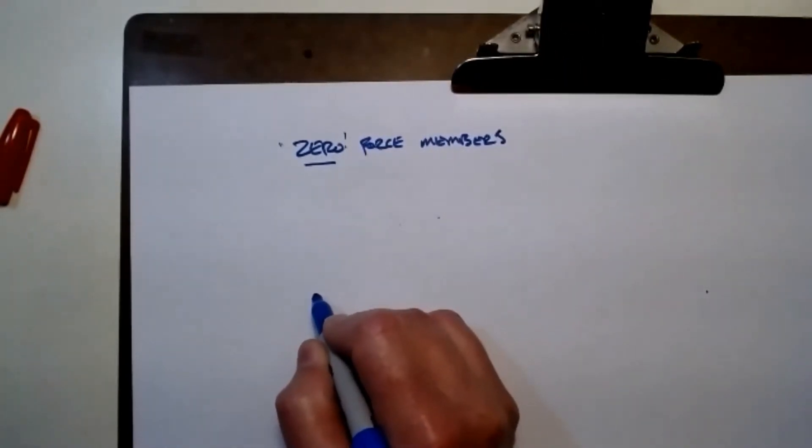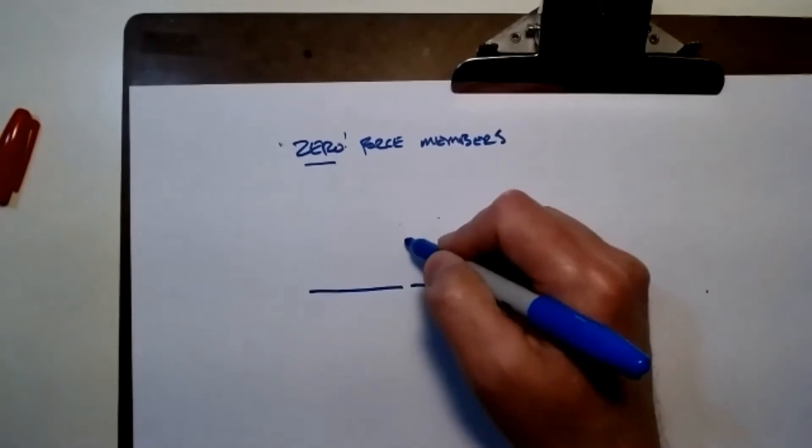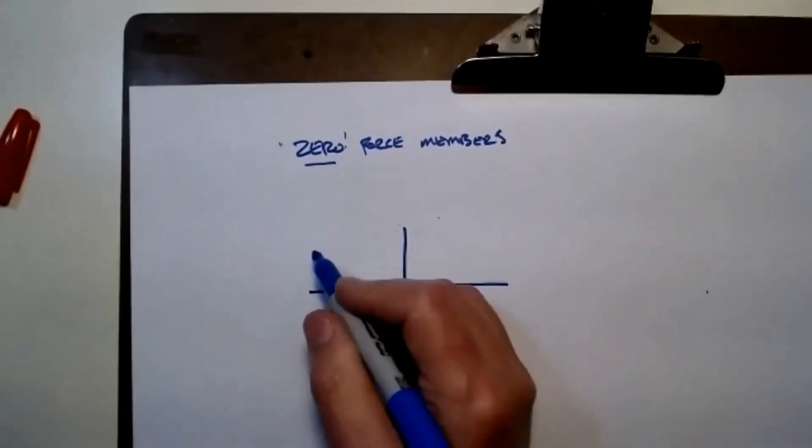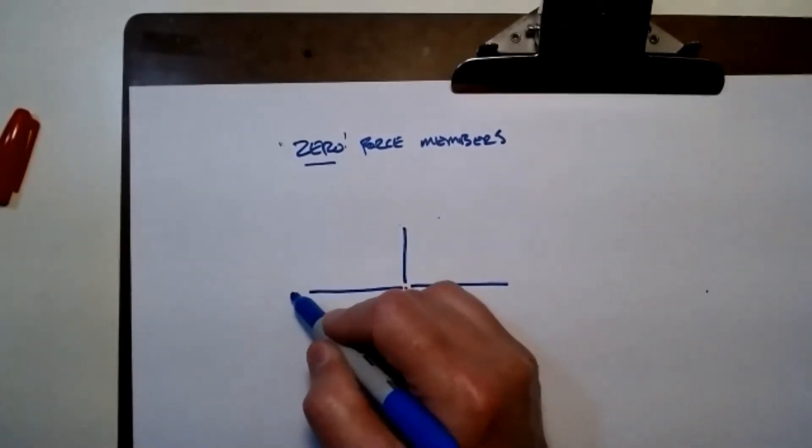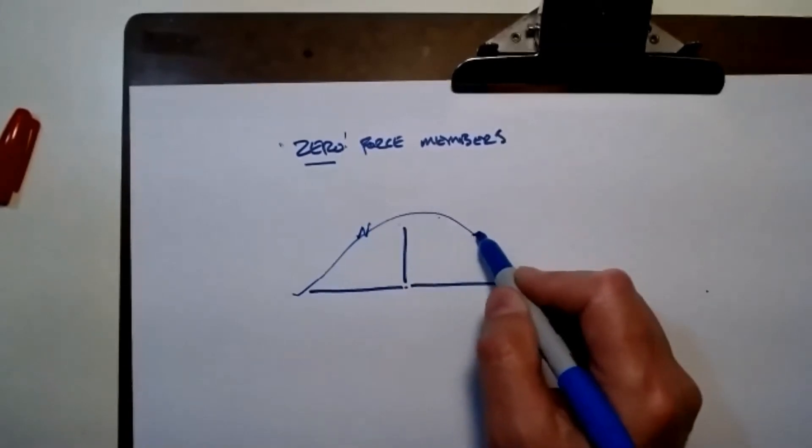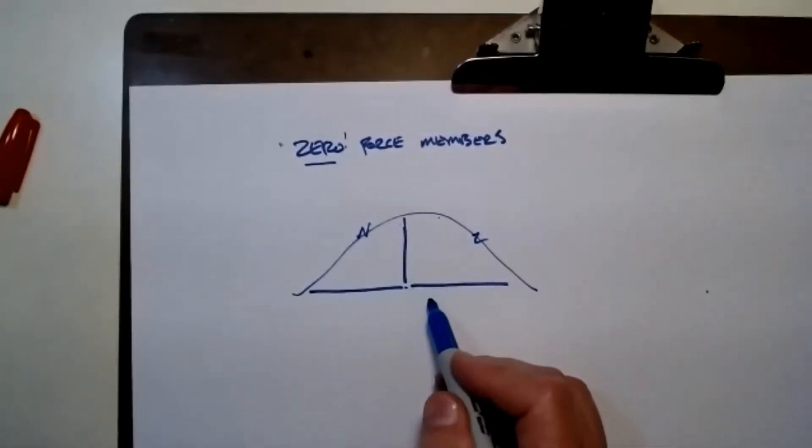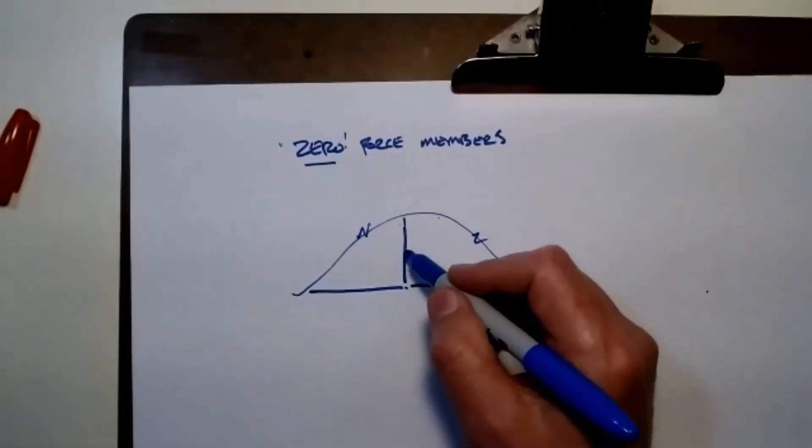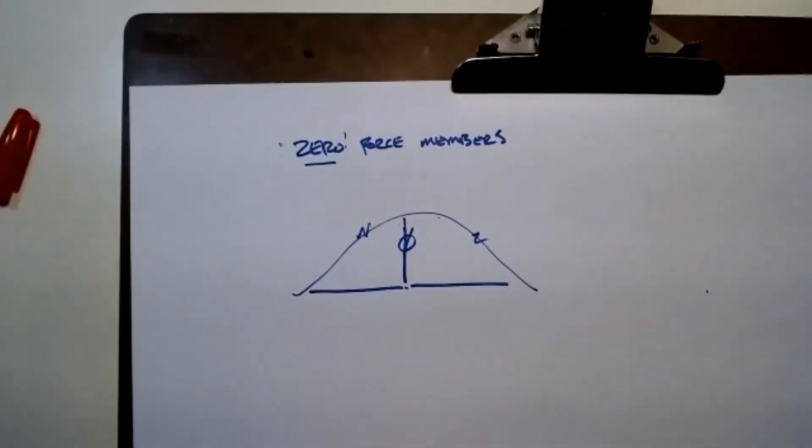A clean way to find zero force members is look for the T joint in a truss. So if I've got a T joint in a truss and I have no load being applied at that joint, then this member is going to be a zero force member.